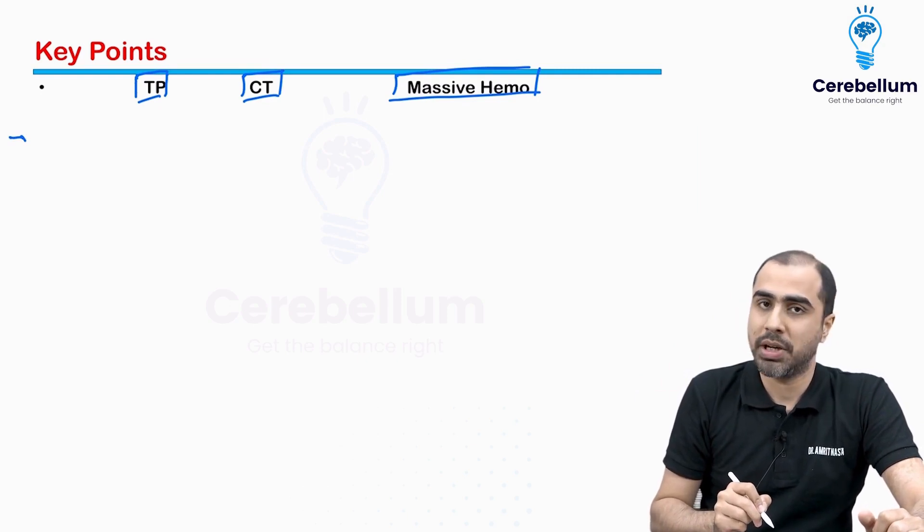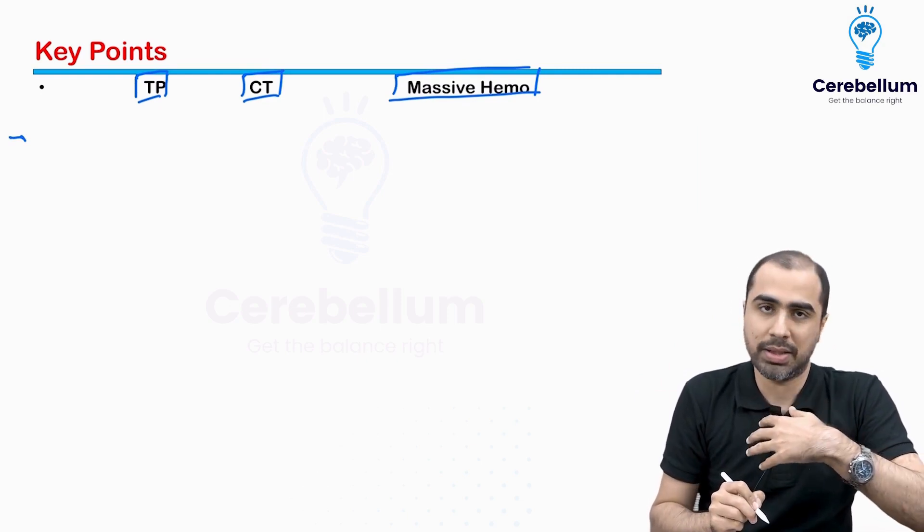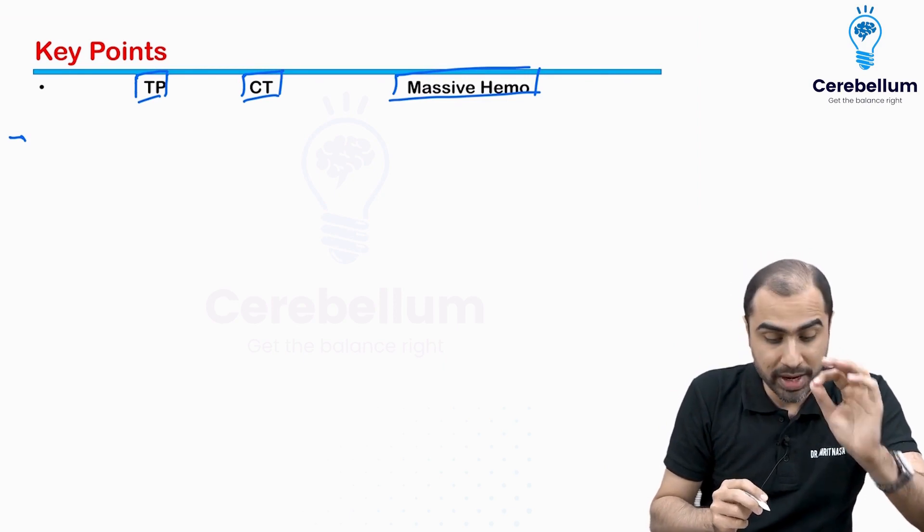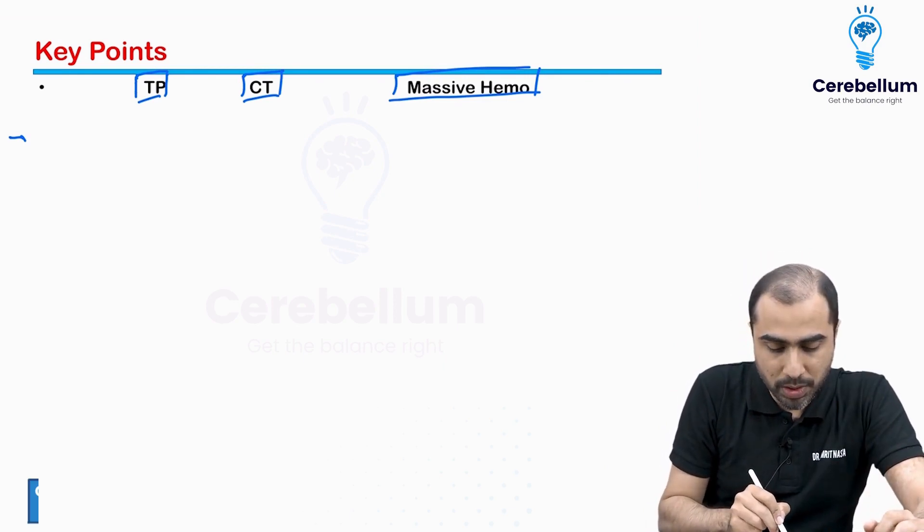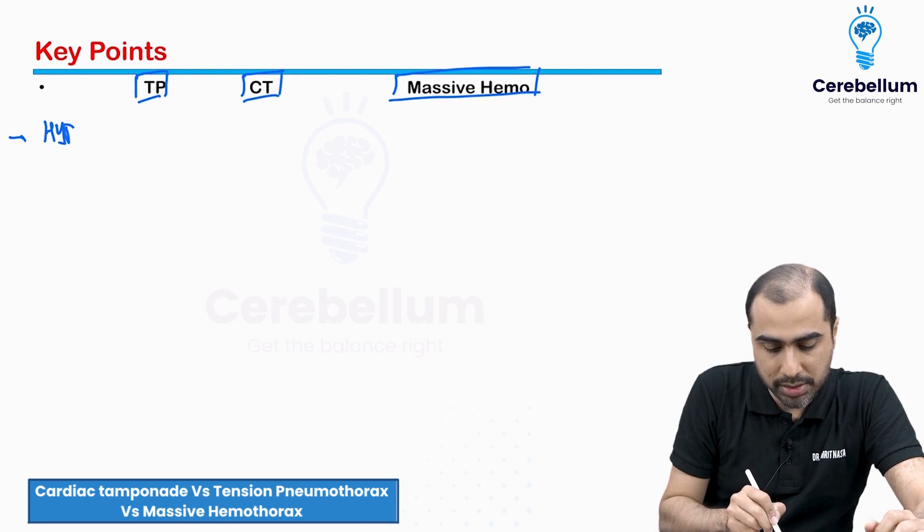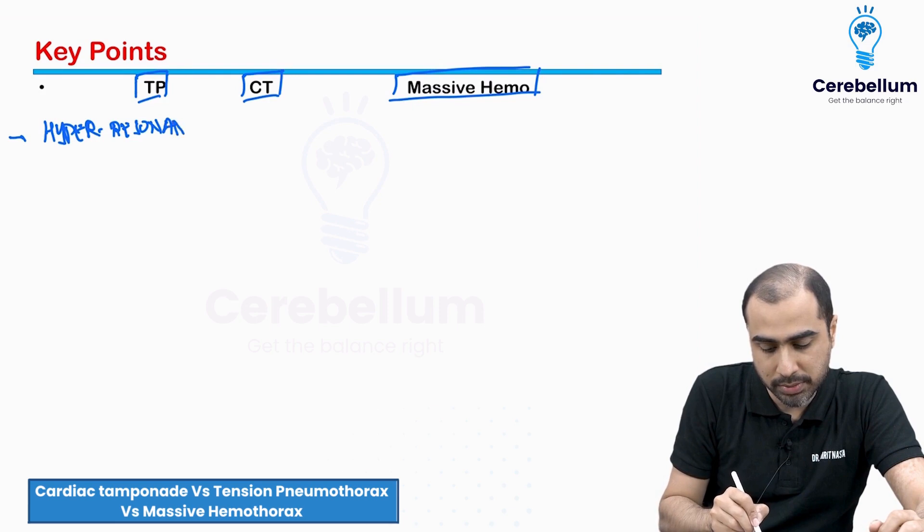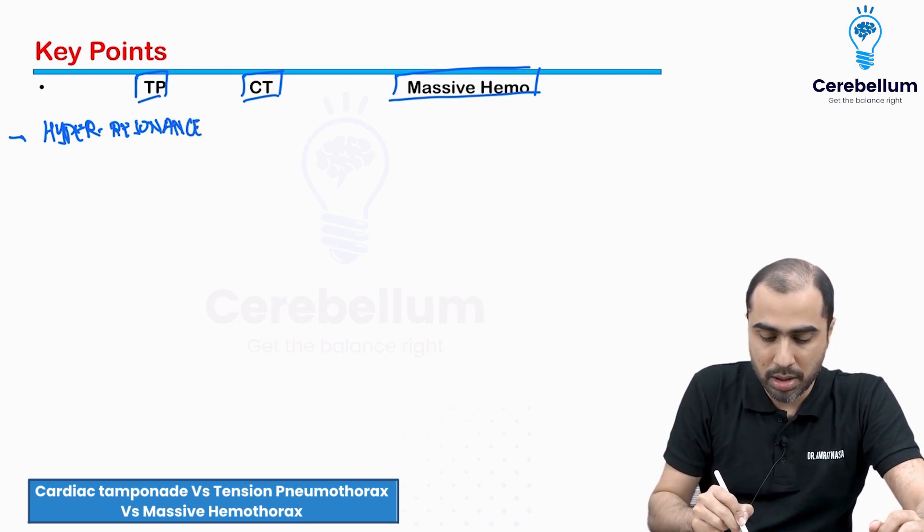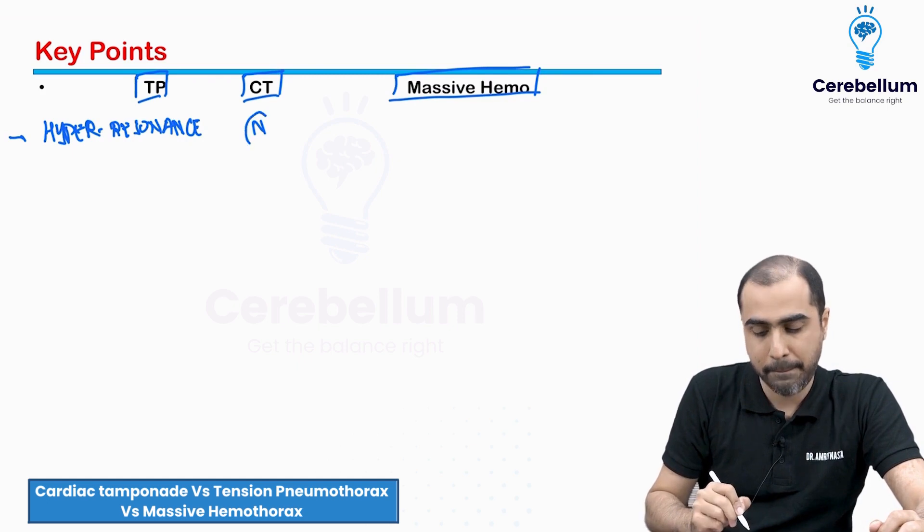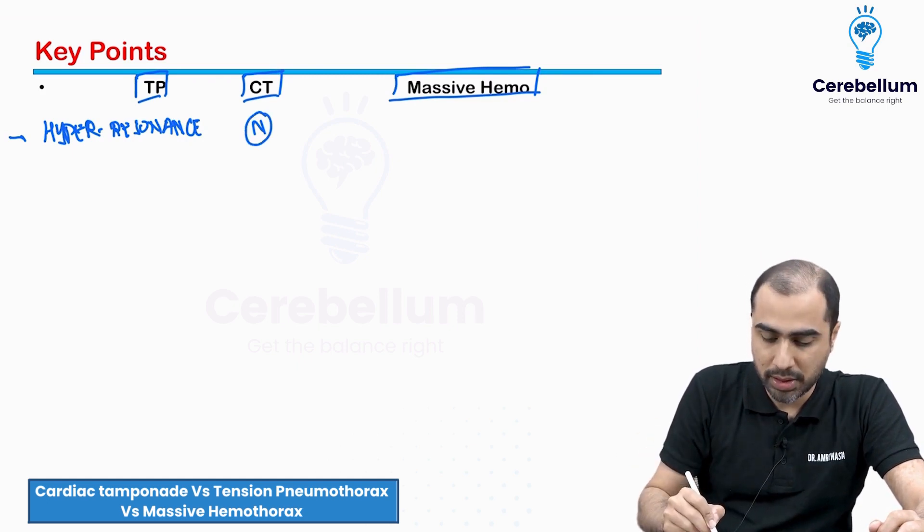So in tension pneumothorax, patient will have features of breathlessness, but the typical findings are: there is going to be hyperresonant lung sounds on percussion. In cardiac tamponade, lung fields will be normal. In massive hemothorax, you will get dullness on percussion.